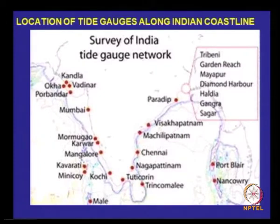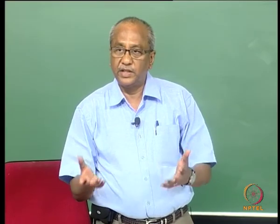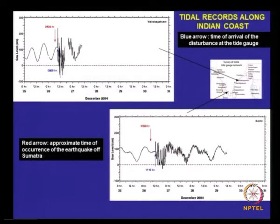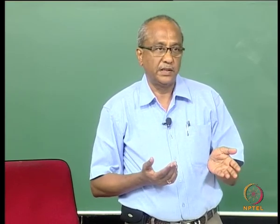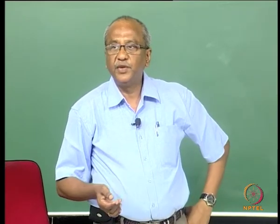Locations of tide gauges along the Indian coastline — we have tide gauges all along the Indian coast. During the propagation of the tsunami, all these tide gauges would certainly record the water level, but what happened is shown here. This is Visakhapatnam, this is Kuchin. You see the blue arrow at the time of arrival; before that you see a nice smooth recording of the water surface elevation, but at the time of arrival the gauge failed — it stripped, meaning the tidal gauge did not have the capacity to record water level beyond that. The range of measurement was only 3 meters, so the water level at these locations might have been more than 3 meters.